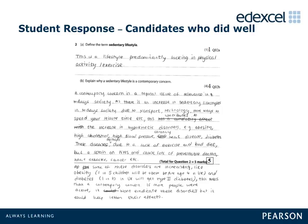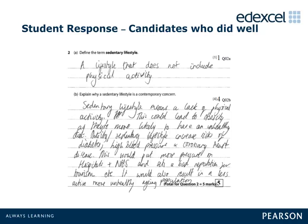Then in 2b, credit is given for: topical issue of relevance in today's society, increase in hypokinetic disorders, poor diet, is a strain on NHS — to gain the maximum 4 marks. In another response, the learner gained 1 mark in 2a for 'a lifestyle that does not include physical activity,' then gained all 4 marks for 2b by writing: leads to obesity, unhealthy diet, sedentary lifestyles increase risk of diabetes, high blood pressure, coronary heart disease, illness, and more pressure on NHS.